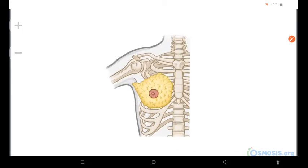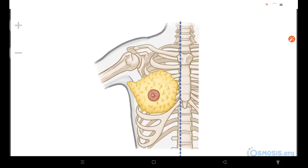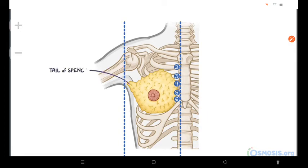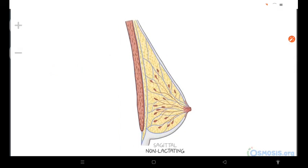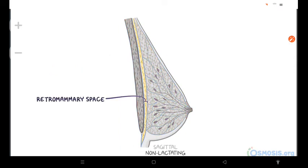As a quick recap: the breasts extend transversely from the lateral border of the sternum to the mid-axillary line, and vertically from the second through the sixth ribs. A small part of the breast might extend along the inferolateral edge of the pectoralis major, forming the tail of Spence. The retromammary space is between the breast and the pectoral fascia, and allows movement of the breast relative to the structures deep to it.